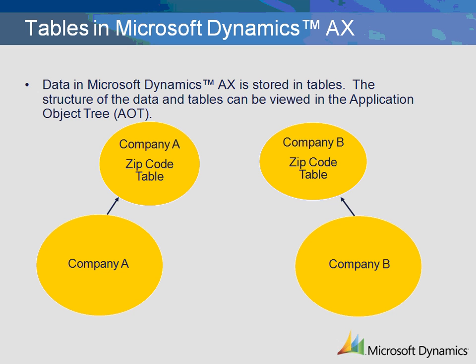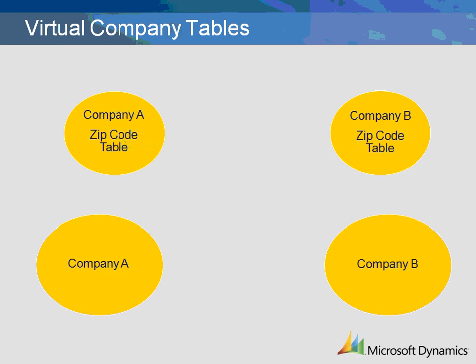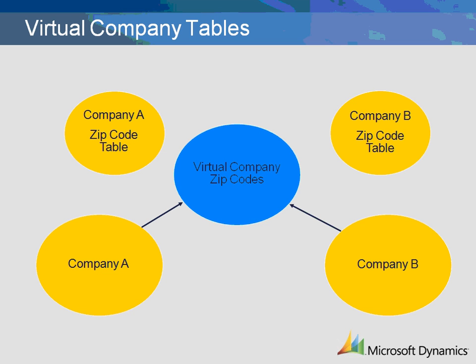If a new zip code is needed, it must be added to both company tables. If a virtual company is set up to contain the zip code table, and Company A and Company B are both linked to this virtual company, then the zip code tables in Company A and Company B are not used. Instead, both companies point to the virtual company table for zip codes. If a new zip code is added in Company A, it is being added to the virtual company table and therefore will be available in Company B.